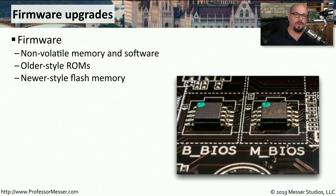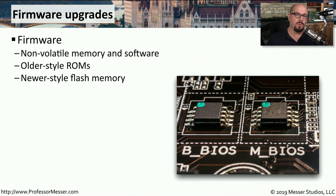When you're performing an upgrade to the BIOS of your computer, you're updating the firmware. This is the software that starts up the system so that you can eventually get an operating system running. On older computers, we would upgrade this firmware by removing a ROM chip from the motherboard and replacing it with a newer chip.